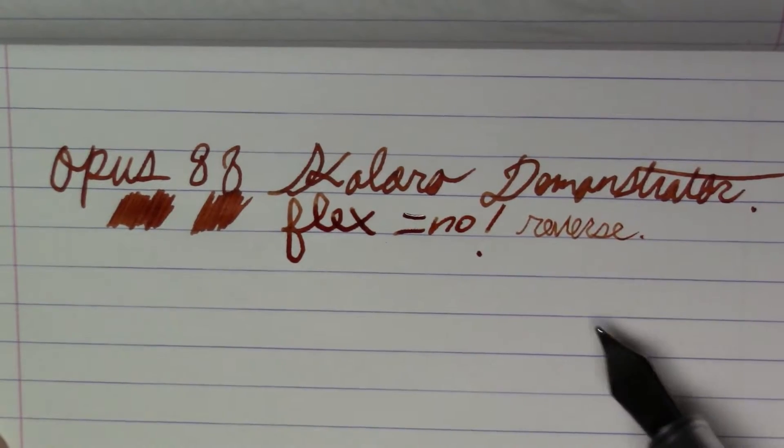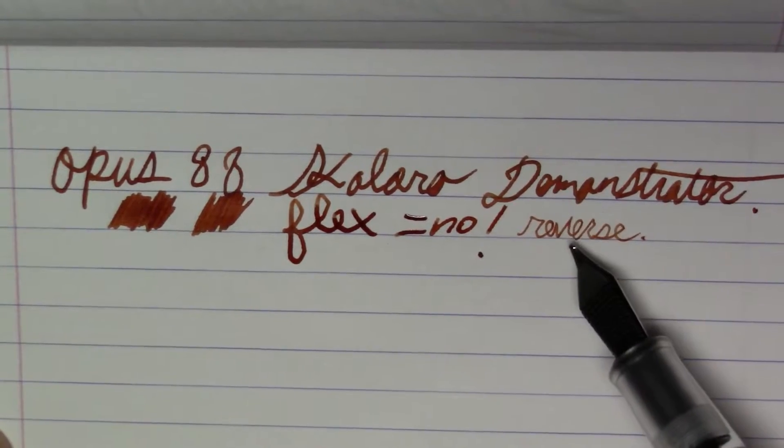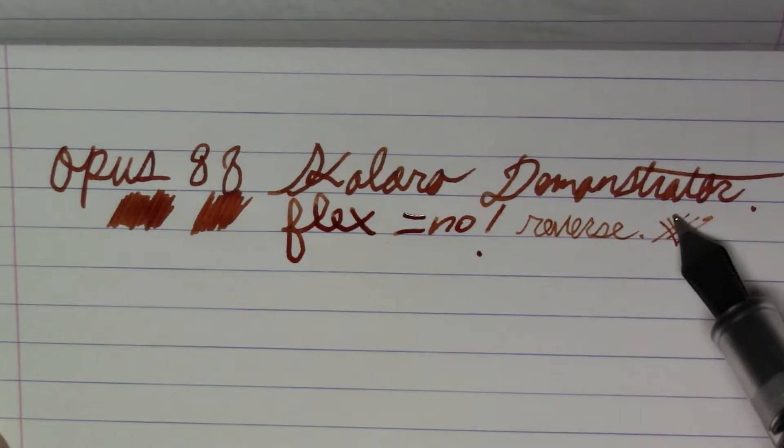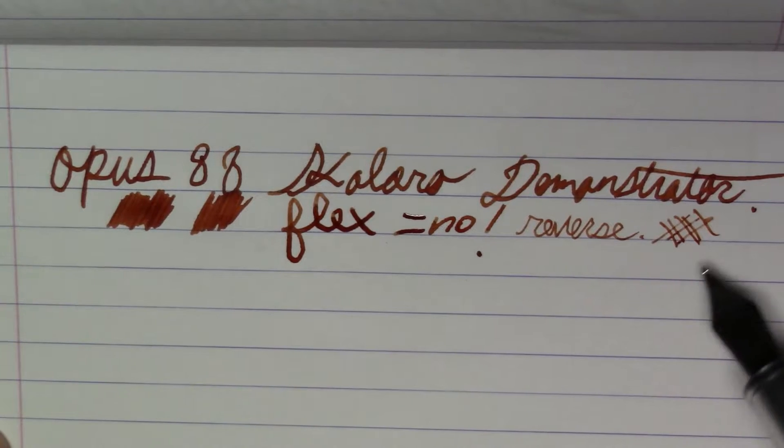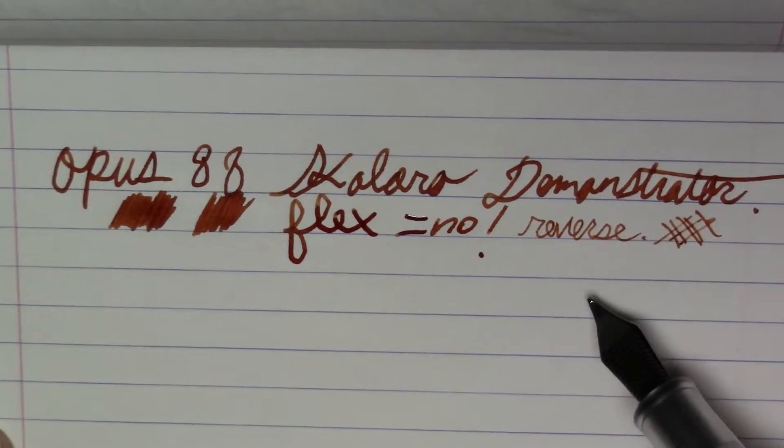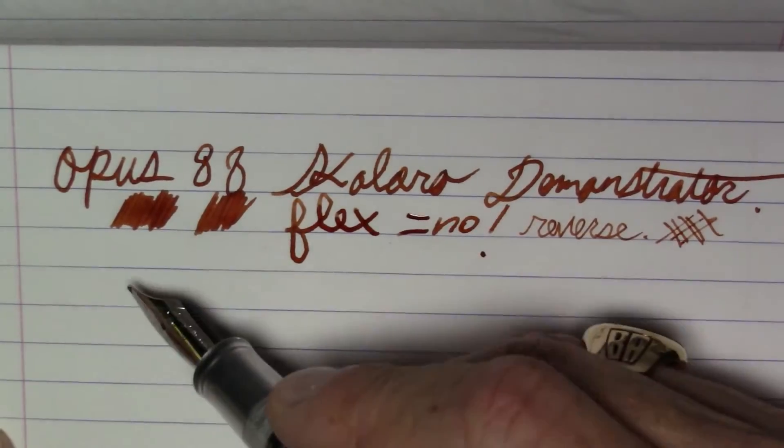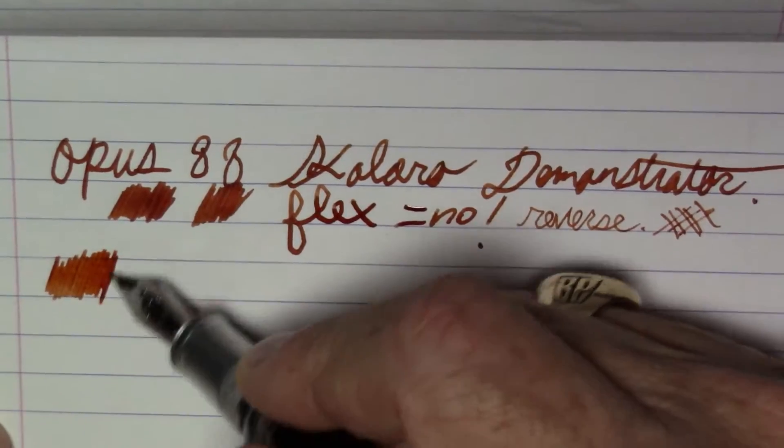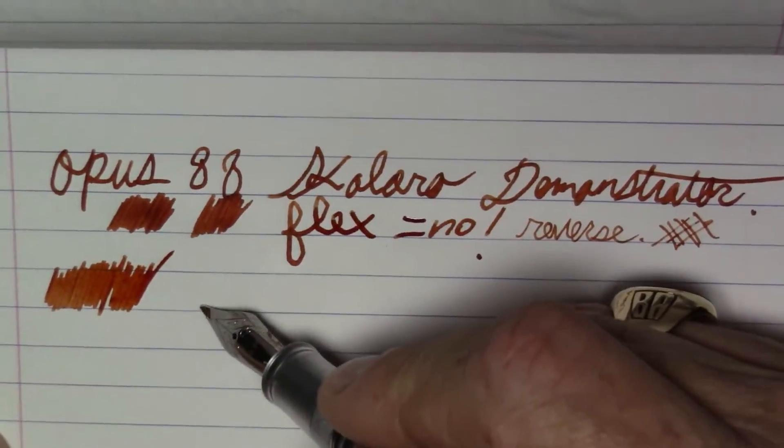But if you want to write finer, reverse writing is actually quite nice. It's a bit scratchy, but you go from a broad to an extra fine quite easily. And it's a little scratchy, but you can definitely get a couple of words out in reverse, which actually writes pretty nice. It lays down a pretty nice wet line and a very smooth line.